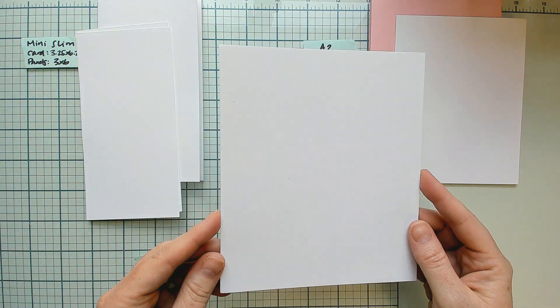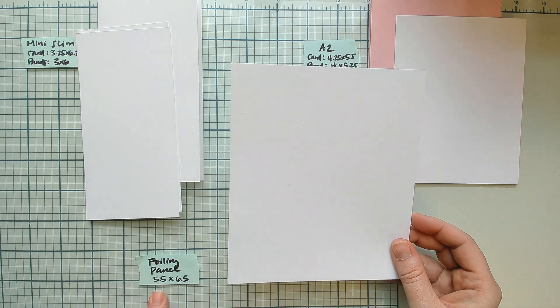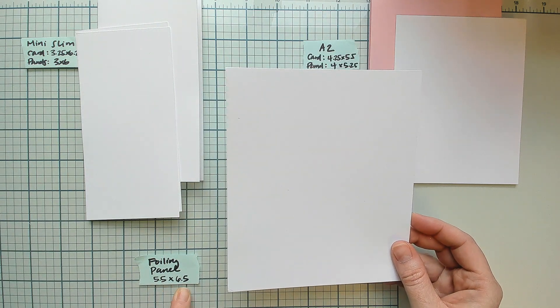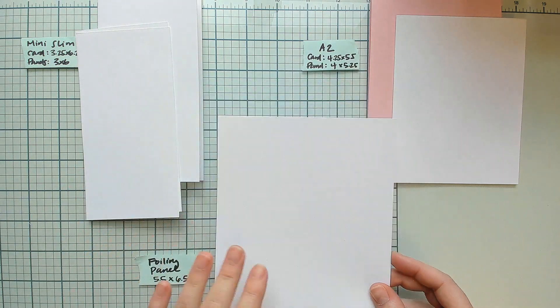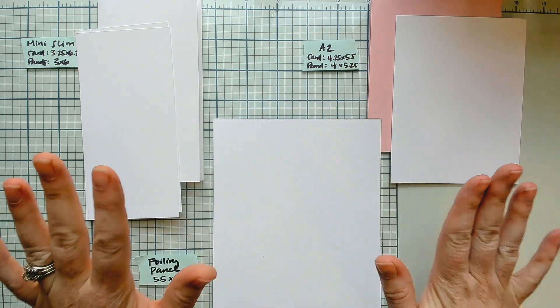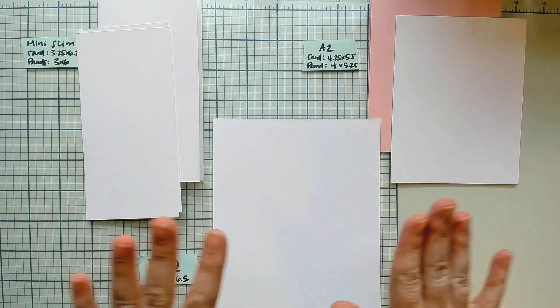I would also like you to prep a foiling panel. My foiling panels are 5.5 by 6.5 inches. Those are all of the cardstock panel prep I would like you to do for homework.